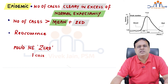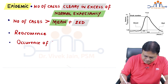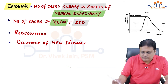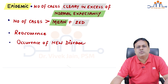This brings us to the third definition: a reoccurrence of a disease that has been eradicated or eliminated is known as an epidemic, because its normal expectancy was zero. Similarly, the occurrence of a new disease in a country is also an epidemic, because its normal expectancy was zero. Epidemic has multiple definitions, but practically all of them mean the same thing. The first two definitions are most commonly asked in examinations.